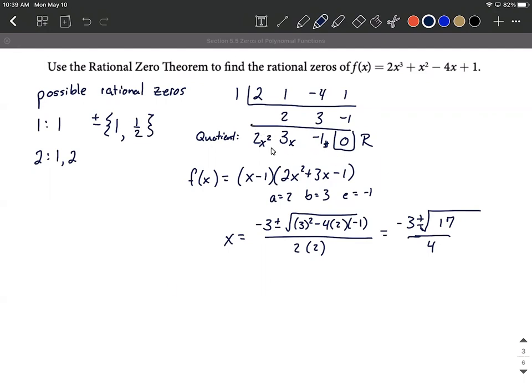So we can say for sure that we have zeros, the one rational zero at 1. But then we also have (-3 - √17)/4 and (-3 + √17)/4. So three different zeros, but the only rational one is going to be that one.